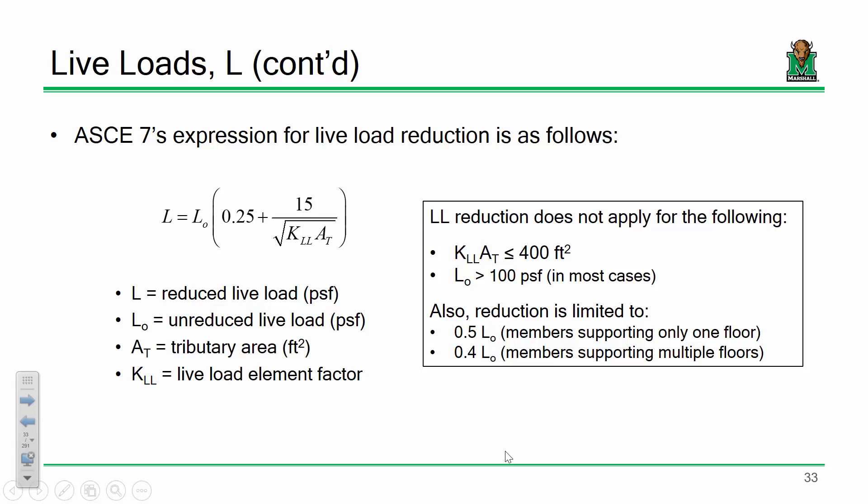What's an example of a member that supports multiple floors of load? A column. So we're talking about beams versus columns, though the code uses generic terms in case you have something like a shear wall supporting multiple floors. For single floors the limit is 50%; for multiple floors it's 0.4.